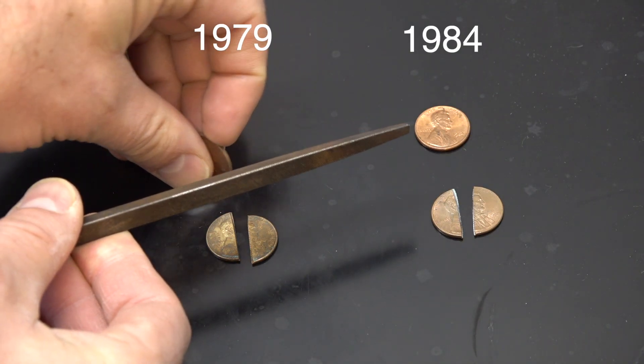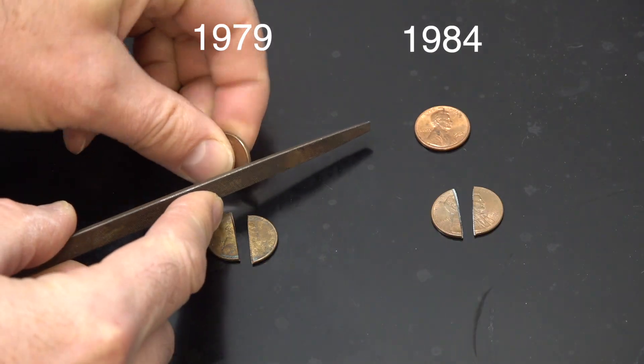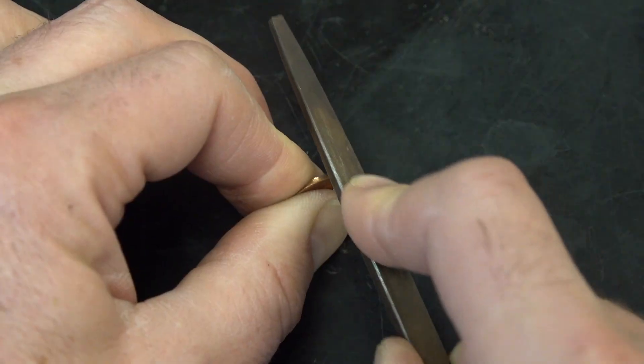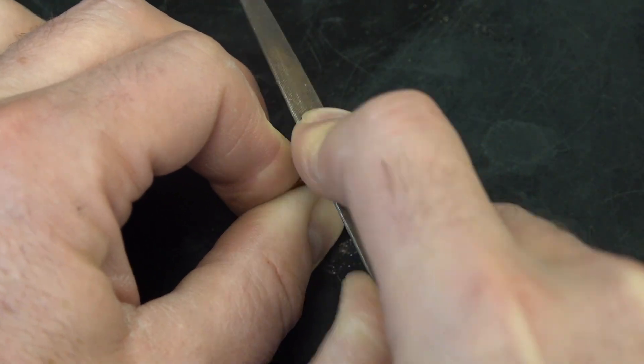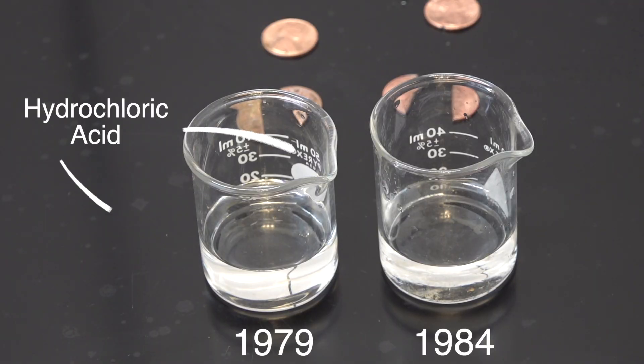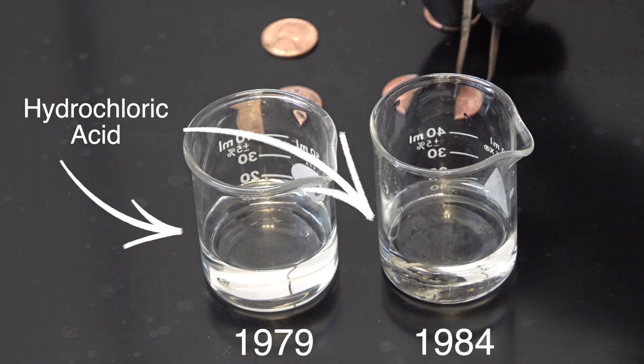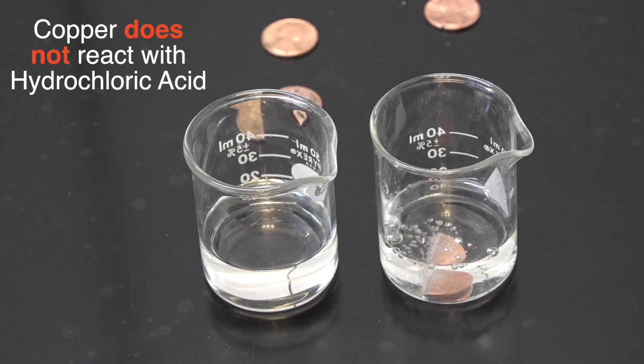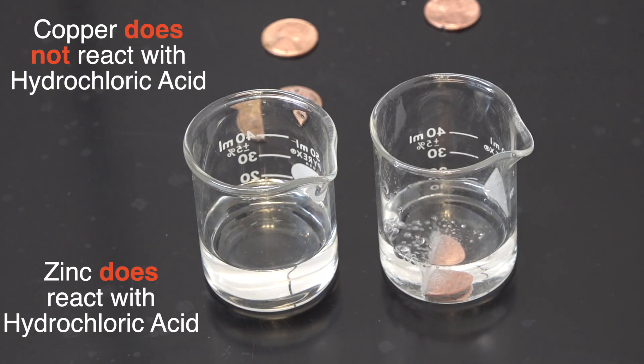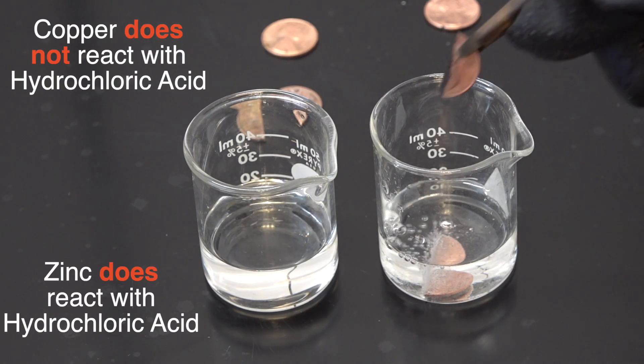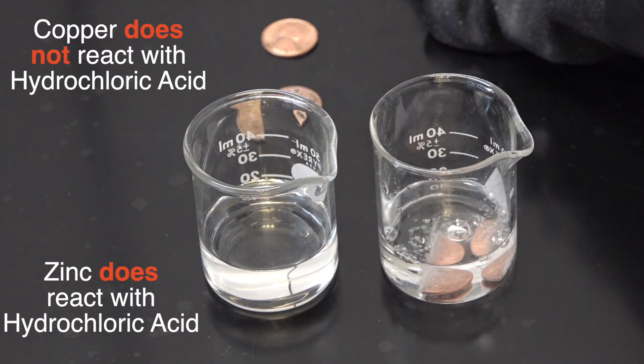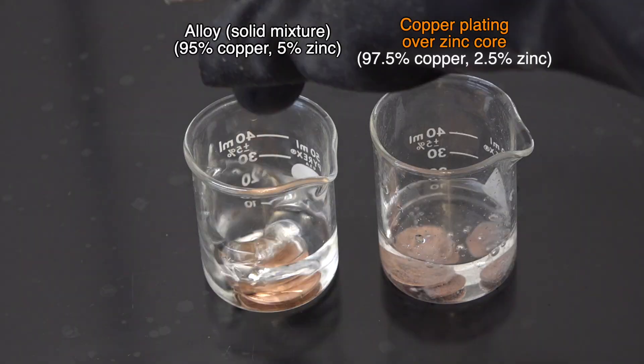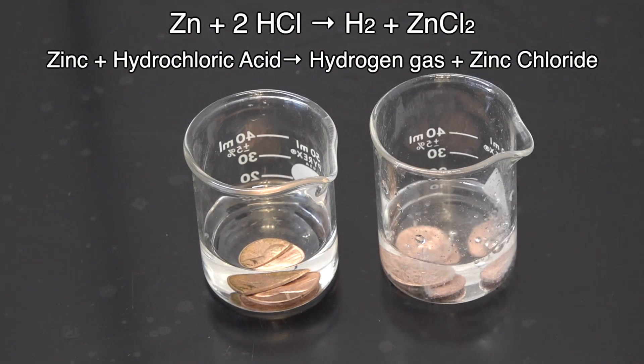We can use these differences to make hollow pennies with some simple chemistry. What we're going to do is take our old pre-1982 pennies and our post-1982, and I'm just going to take a triangular file and score it just enough that we're getting towards the center. Then concentrated hydrochloric acid and drop them inside. And then we're going to start to see the chemistry happen.